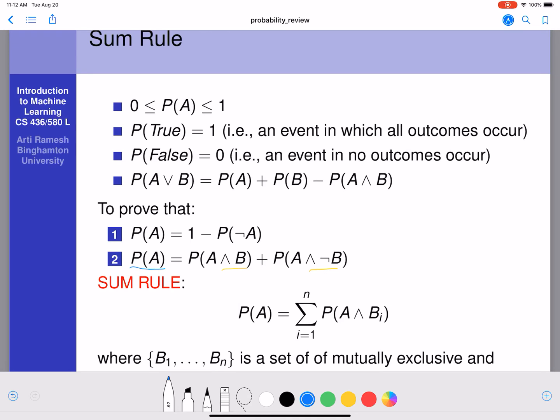So here, if A and B is this area where both A and B occur, and A and not B is this area where A occurs and not B occurs.